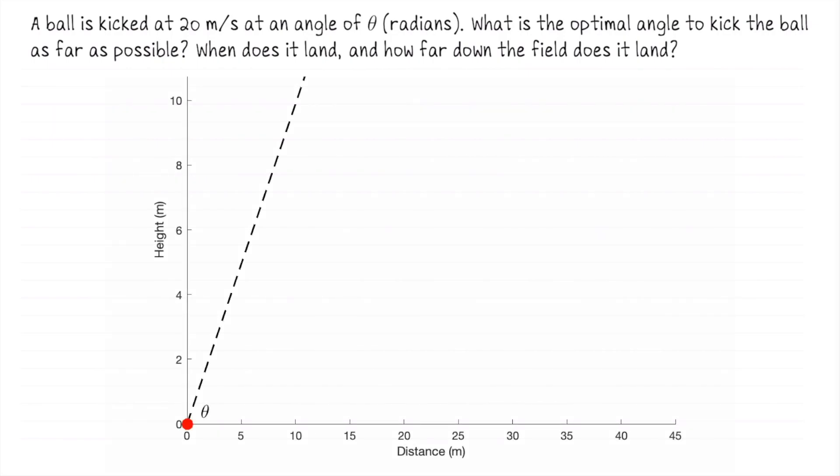In this exercise, we would like to answer the following questions. We are told that a ball is kicked at 20 meters per second at an angle of theta radians. What is the optimal angle to kick the ball and have it land as far away as possible? And then with that angle, when does it land and how far down the field does it land?